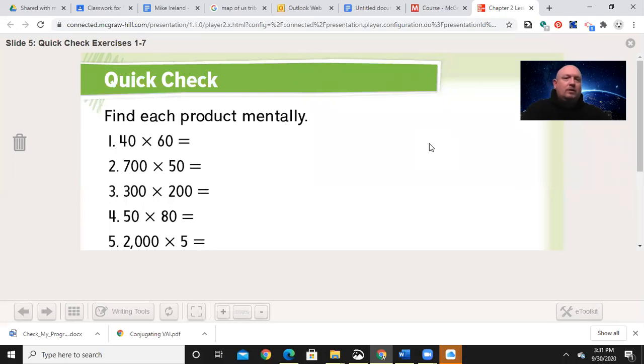Let's begin by doing the quick check questions. Find each product mentally. Remember our steps: we multiply the non-zero digits, find out how many zeros were in those factors, and then add them into the product. Pause the video and come back with your answers. You may do this on scrap paper or a whiteboard.